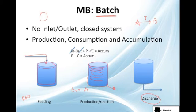So we have no inlet, no outlet, and since it's a closed system, I'm going to have accumulation, because A is dropping and B is increasing. We have production, which is B, and consumption, which is A. That's why we have accumulation.